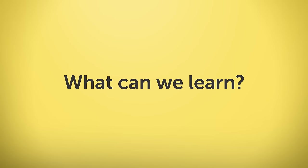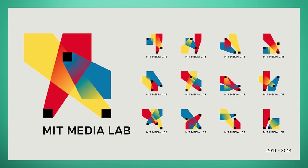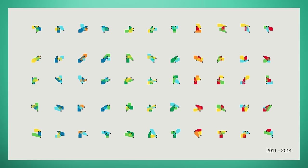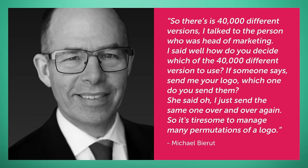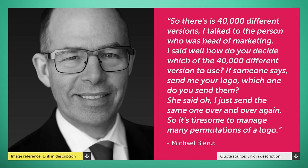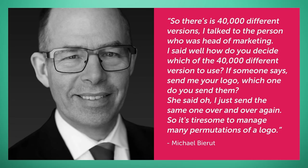This logo set was designed in 2014 to replace the previous logo system that had been used since 2011. The previous logo system had 40,000 different permutations. To quote Michael Beirut: "So there's 40,000 different versions. I talked to the person who was head of marketing. I said, well, how do you decide which of the 40,000 different versions to use? If someone says send me a logo, which one do you send them? She said, oh, I just send the same one over and over again." So it's tiresome to manage many permutations of a logo — this was one of the reasons why the logo was redeveloped in 2014.